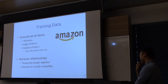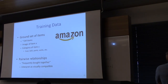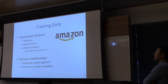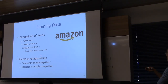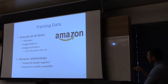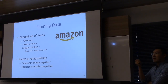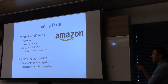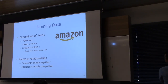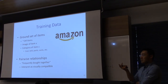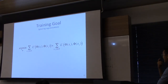The training data comes from Amazon. There's a ground set of about a million elements — jewelry, coats, pants, belts — each with an image and a category. You can also mine Amazon for pairwise relationships. The specific one focused on in this paper is whether two items were frequently bought together — something visible when browsing Amazon. The interpretation is that two clothing/accessory items are visually compatible in terms of style if they're frequently bought together.